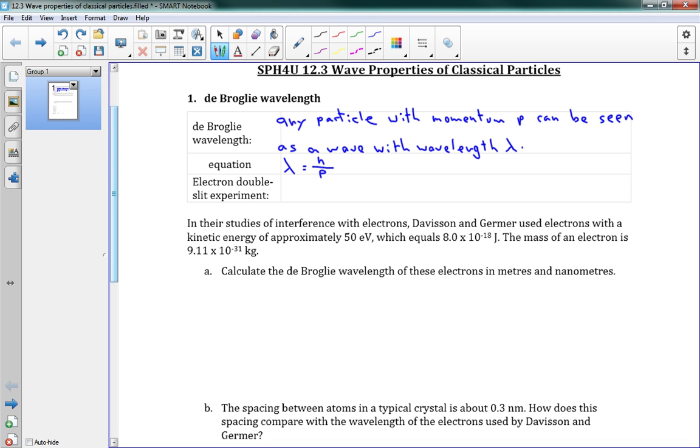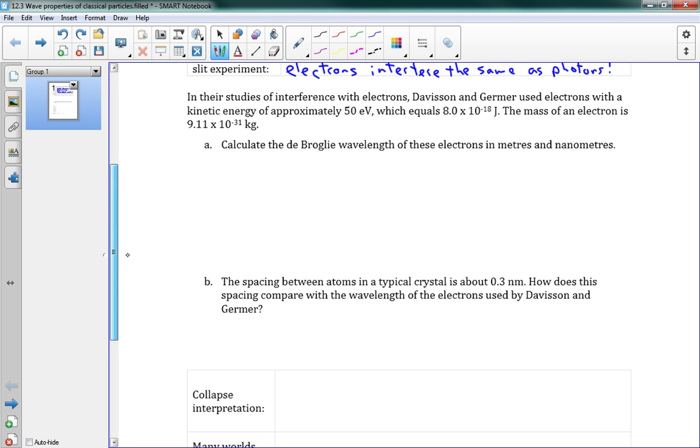Alright, and so this was verified by doing an electron double-slit experiment, where, just like the light, they found that electrons interfere the same as photons. Which was pretty amazing stuff. Okay, we're going to do some calculations on that very experiment.